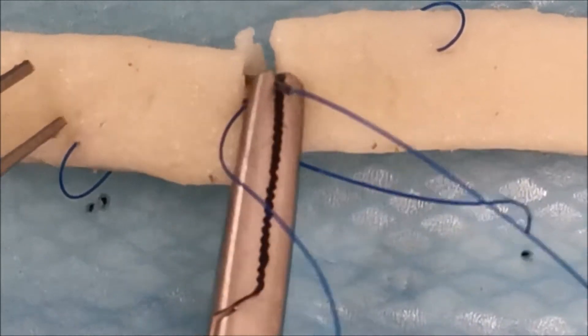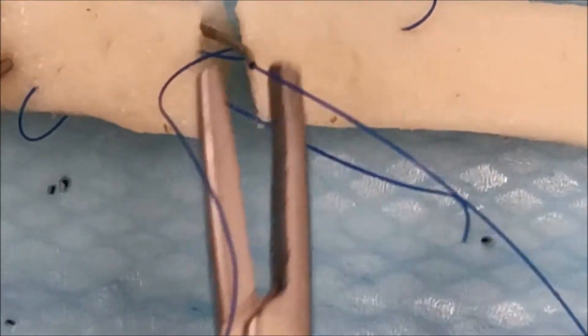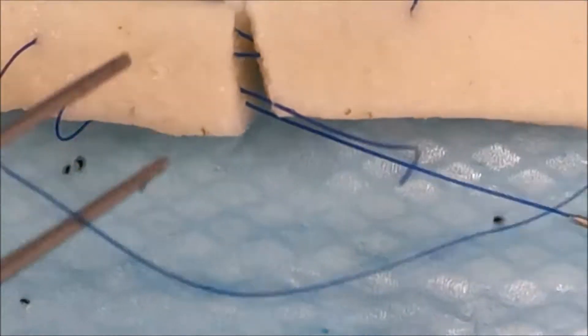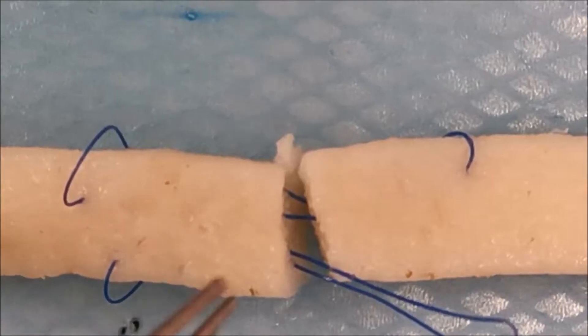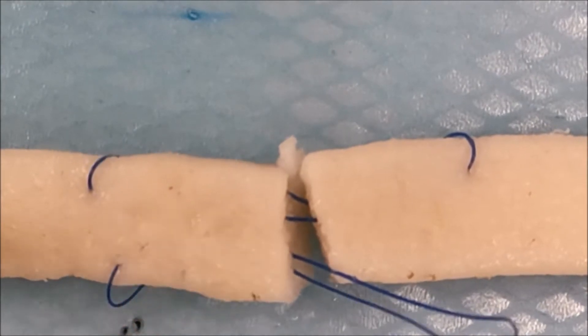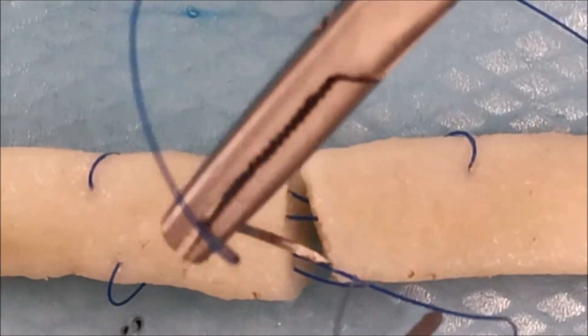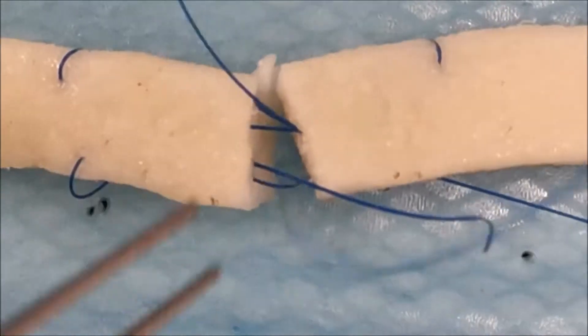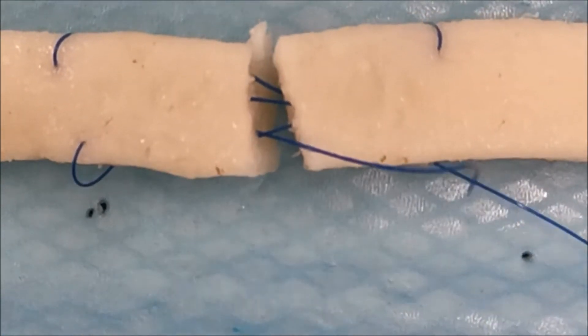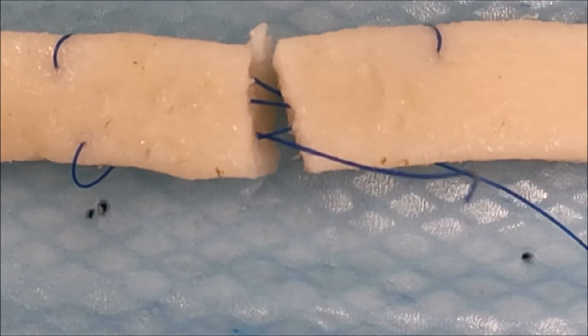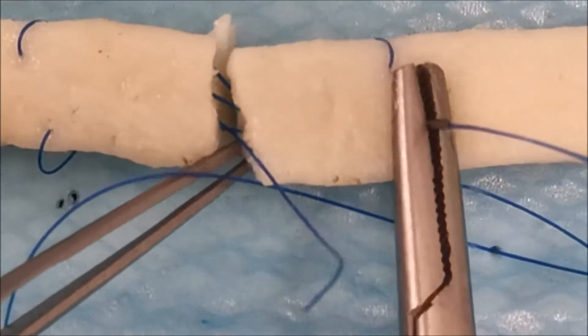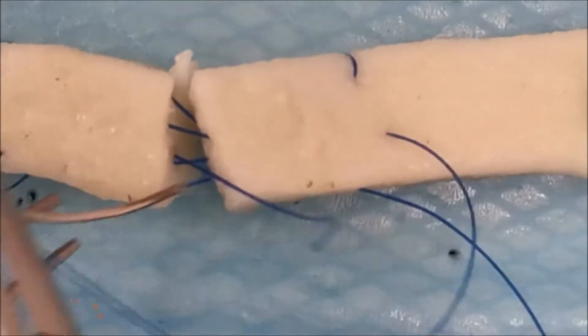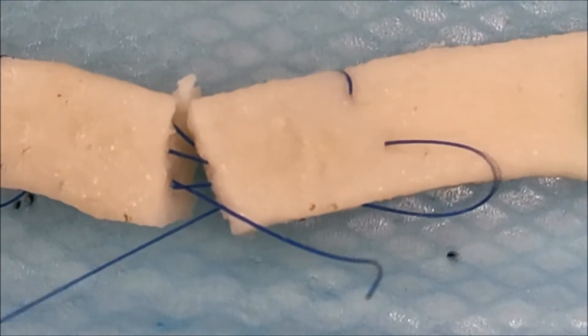The same is done on the other side. A variation of this is the Adelaide repair which is similar to this but each corner is locked. If you use this repair, it will be more difficult to glide at the end of the repair. Whereas with this one, it does not lock, and when you tie your suture at the end, you can control how much bunching or tightness you have in your tendon repair.